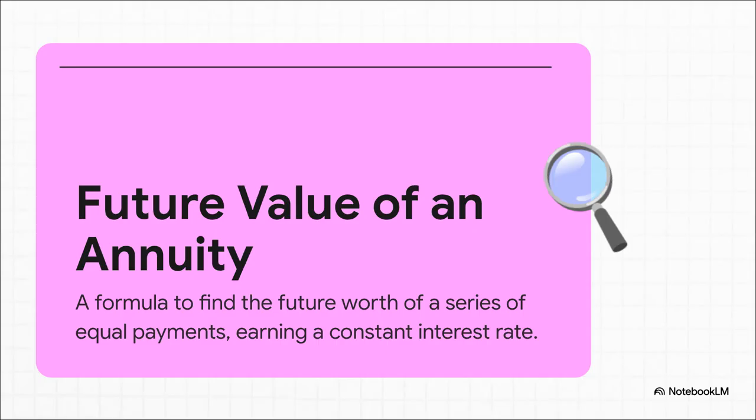Now, that might sound a little intimidating, but an annuity is just a fancy word for a series of equal payments, you know, just like our $200 a month. This formula is the bridge that connects our payments, the number of months, and the interest rate to that final value we just figured out.